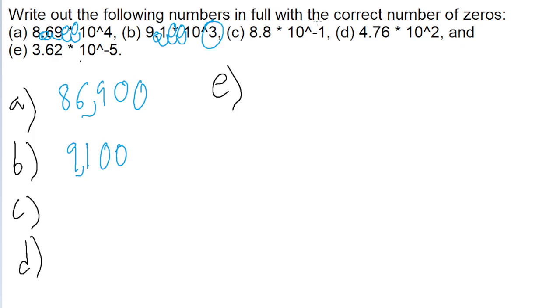Now for part C, we now have a negative exponent, which means we're moving the decimal point to the left, because that's going to make the number smaller. So 8.8, we move the decimal one space to the left, and we don't need to add any zeros, that's just 0.88, or you can leave off this leading zero if you want because it's in front of the decimal point.